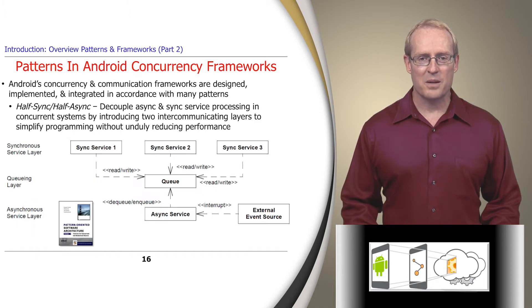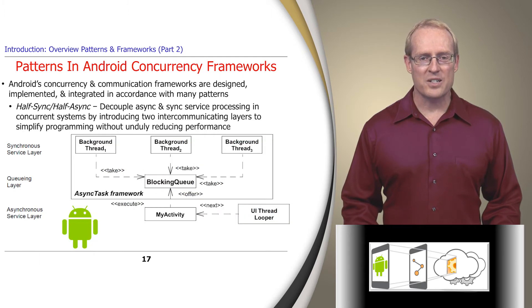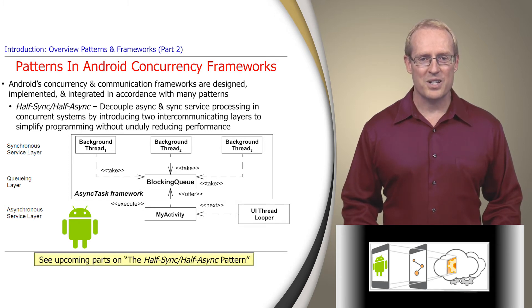The half-sync, half-async pattern decouples asynchronous and synchronous service processing in concurrent systems by introducing two layers, one for asynchronous service processing and one for synchronous service processing. These layers communicate via one or more synchronized queues and simplify concurrent programming without unduly reducing performance. The Android AsyncTask framework applies this pattern to allow one or more background threads to block synchronously while processing long-duration operations, and then pass the results via a queue to the user interface thread, which only performs short-duration, non-blocking, or asynchronous operations.